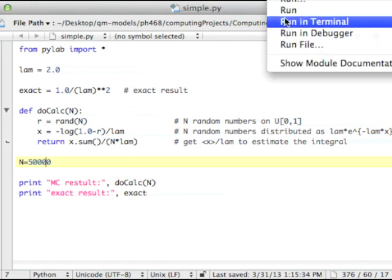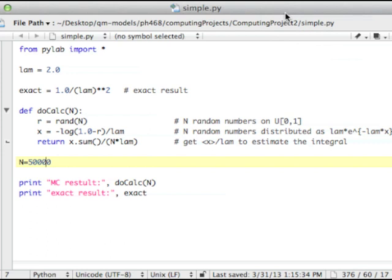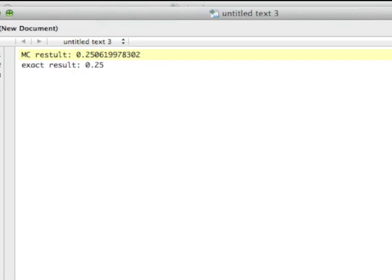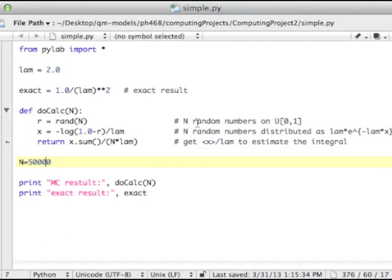So let's go ahead and run this. I'll just choose run here. And we'll see what we get. And there's the answer. The Monte Carlo result was 0.2506 and change. The exact result is 0.25. Of course, we know I only took like 50,000 samples, I think, 50,000 samples. And so we didn't get a very precise result, but it was pretty close.